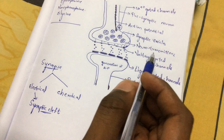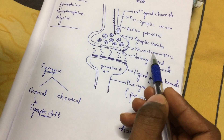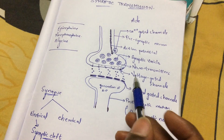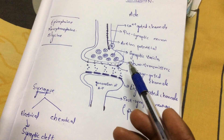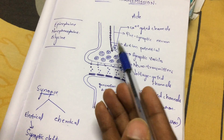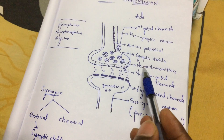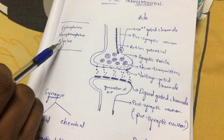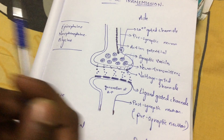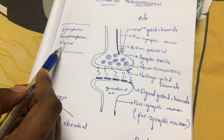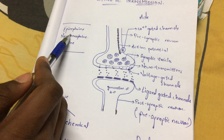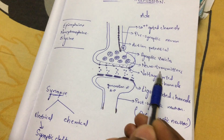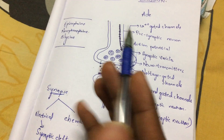Chemical synapses involve what are known as neurotransmitters. Neurotransmitters are mainly helpful in the transmission of neural signals from the presynaptic neuron to the postsynaptic neuron. The major types of neurotransmitters are epinephrine, norepinephrine, and glycine. Glycine works only in some moments, but epinephrine and norepinephrine are the major categories mainly helpful in the transmission of nerve signals.